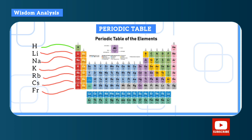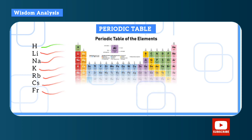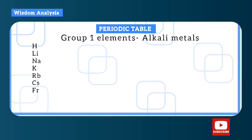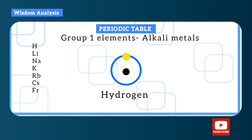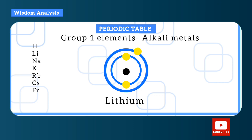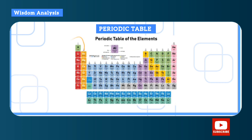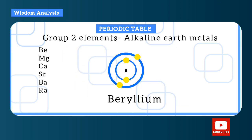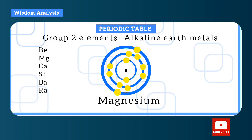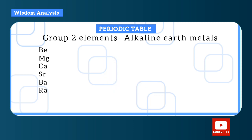This is group one — vertically we count down: hydrogen, lithium, sodium, potassium, rubidium, caesium, and francium. All group one elements have one electron in their outermost shell. Now for group two, all elements have two electrons in their outermost shell. So the group number is determined by the number of electrons in the outermost shell.